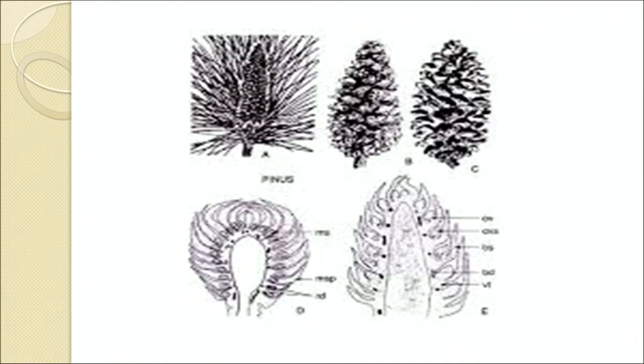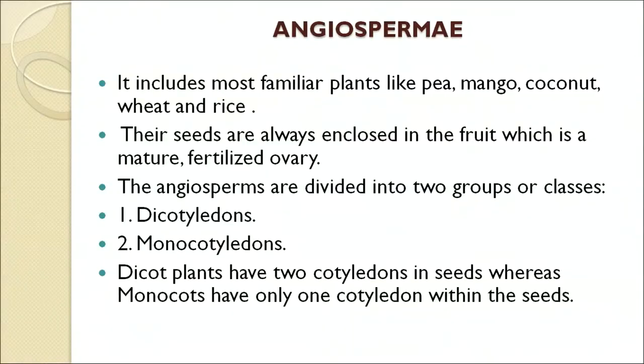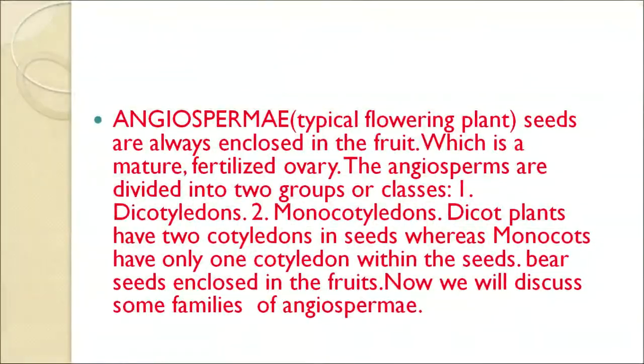Now we move on to Angiosperms, which include most familiar plants like pea, mango, coconut, wheat and rice — typical flowering plants. Seeds are always enclosed in the fruit, which is a mature fertilized ovary. Angiosperms are divided into two main classes: dicotyledons and monocotyledons. Dicot plants have two cotyledons in seeds, whereas monocot plants have only one cotyledon within the seeds.